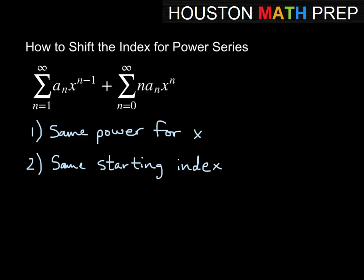You'll notice first we have x to the n minus 1 and we have x to the n, and we also have n equals 1 and n equals 0. There are a few ways to do this - I'm just going to show you one method. The first thing we want to do is go through each power series and let k equal to the power of x that we have in each power series. For this one we'll have k equal to n minus 1, and for this one we'll have k equal to n.